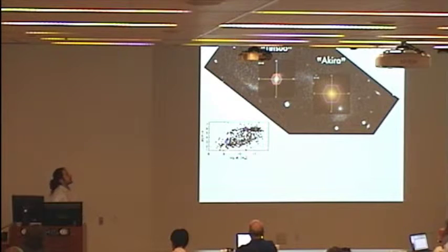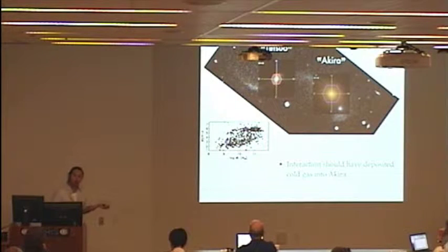And Akira is a typical field quiescent galaxy. But Akira's quiescence is interesting, because merger simulations indicate that Tetsuo should have deposited some cool material onto Akira by this point of the interaction. Meaning that Akira should be forming stars from this cool material. Now, we can test this prediction by looking at the sodium D doublet absorption lines at 5890 and 5896 angstroms, which are probes of the cool ISM.